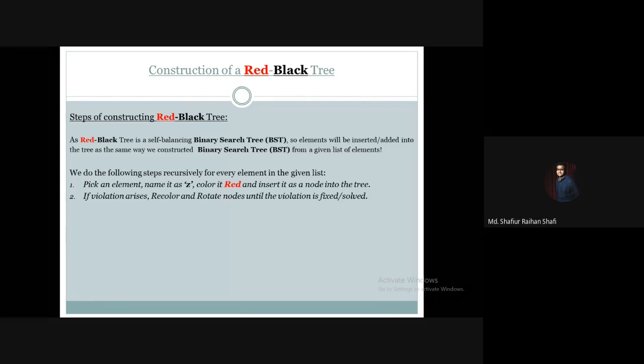From the list of elements, we will pick one element, call it Z, and insert it with a red color into the tree. So the first step is to pick an element, name it Z, color it red, and then insert it as a node into the tree.